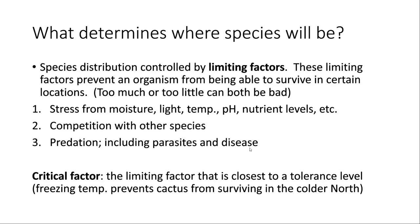Organisms have a whole bunch of limiting factors, but the critical factor — the most important one — is the limiting factor closest to its tolerance level. The tolerance level or tolerance limit is essentially the threshold at which that organism can no longer survive. For the cactus, it can live in extreme heat, extremely low moisture, and poor soil nutrients, but the critical factor is temperature: if it gets too cold, the cactus can't survive. That's referred to as the critical factor.